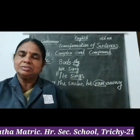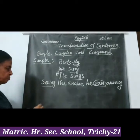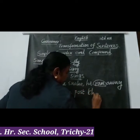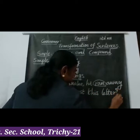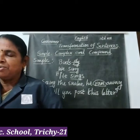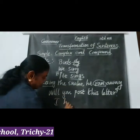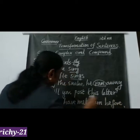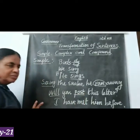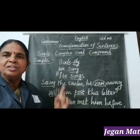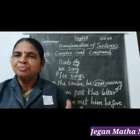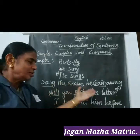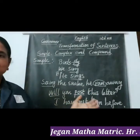Let me give more examples. 'Will you post this letter?' — this is also a simple sentence. 'Will post' is a future tense form but it counts as a single verb. Similarly, 'I have met him before' — 'have met' is present perfect tense but it is still a single verb. Both are simple sentences.